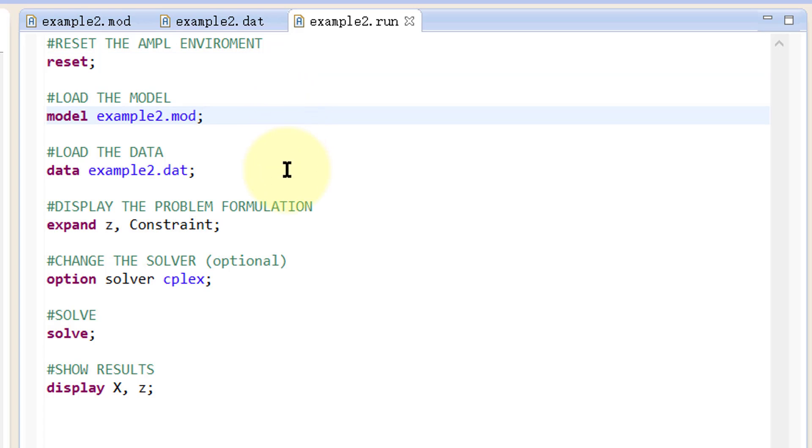Then we load the model, load the data, and display the problem. So we can make sure it is formulated correctly before we solve it. After that, we change the solver if necessary. Solve the problem and display the optimal solution x and z.